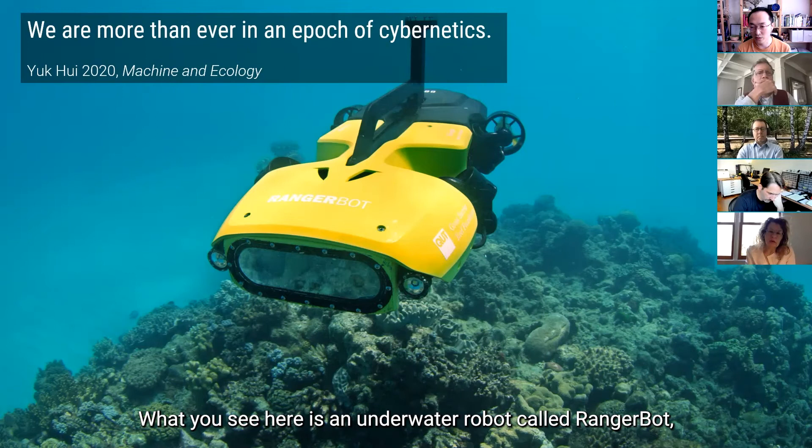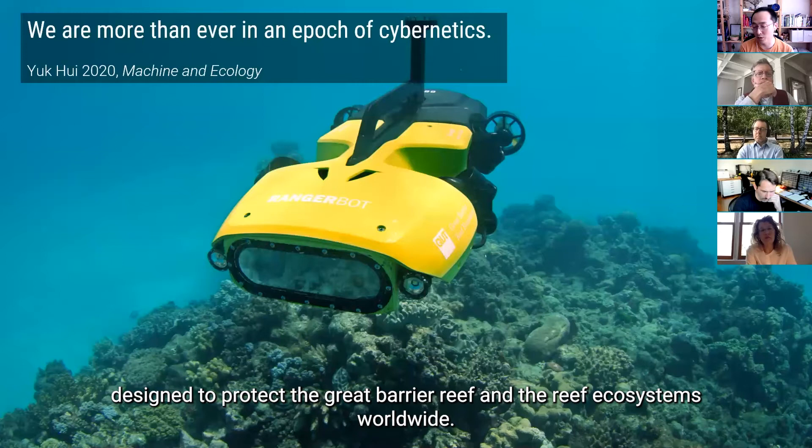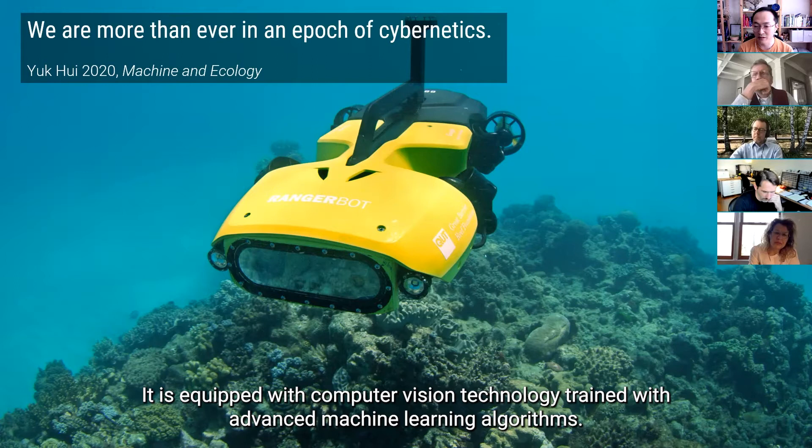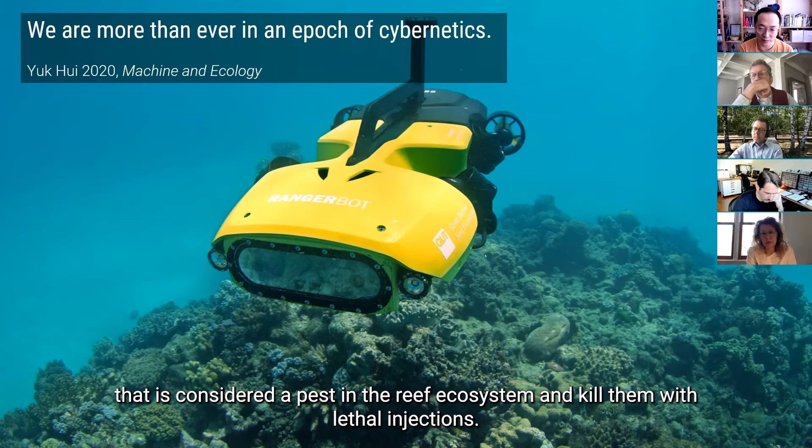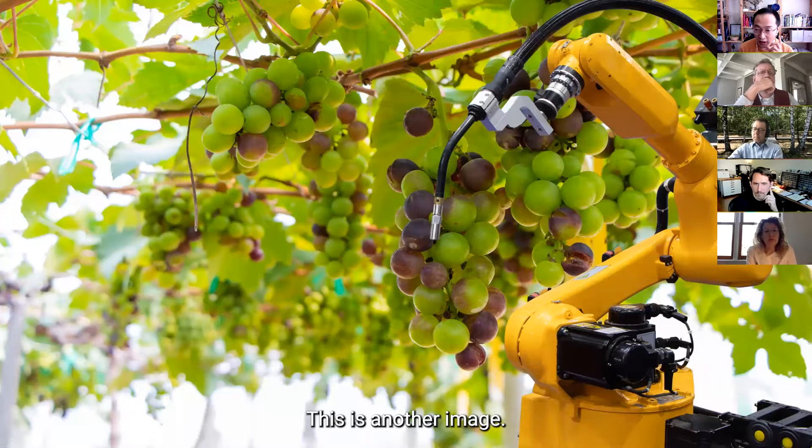And here are some images. What you see here is an underwater robot called a rangerbot designed to protect the Great Barrier Reef and the reef ecosystem worldwide. It is equipped with computer vision and technology trained with advanced machine learning algorithms. It can navigate through the ocean bed and identify a kind of coral eating starfish that is considered a pest in this reef ecosystem and kill them with a lethal injection.